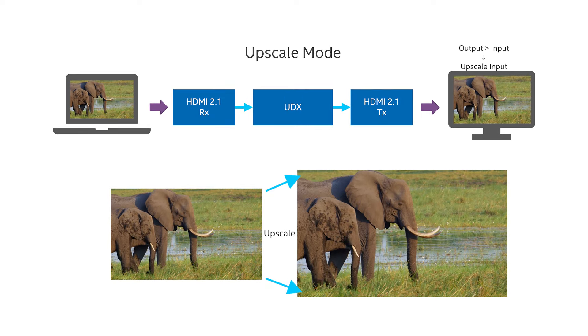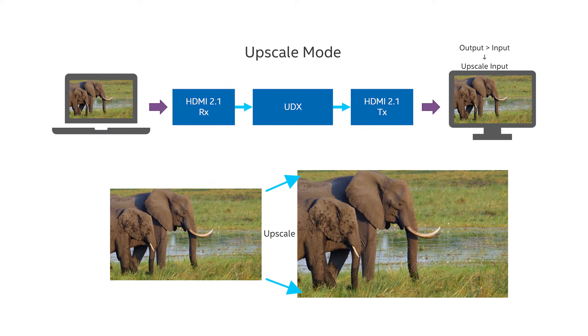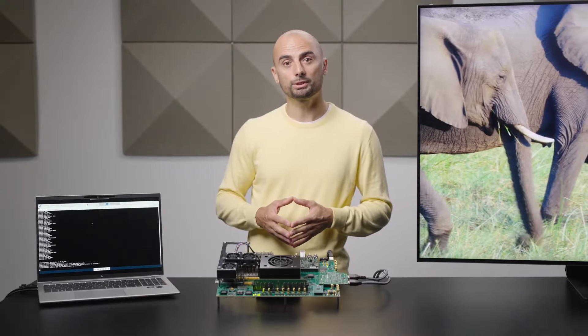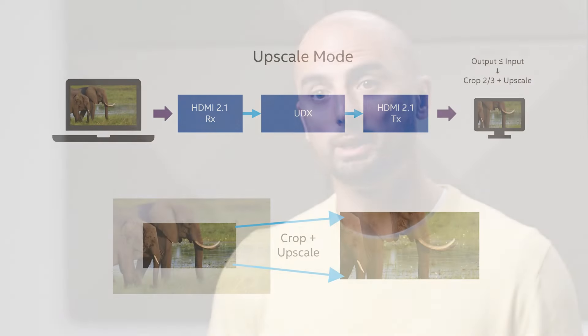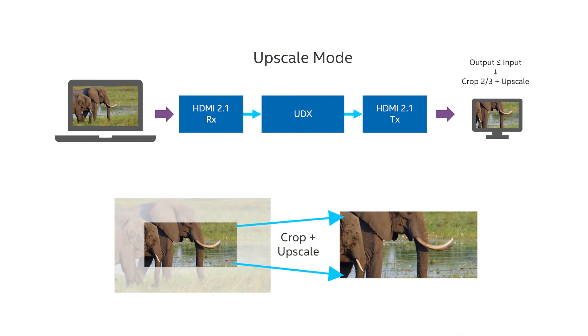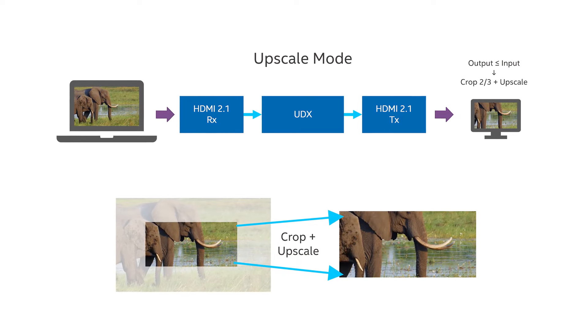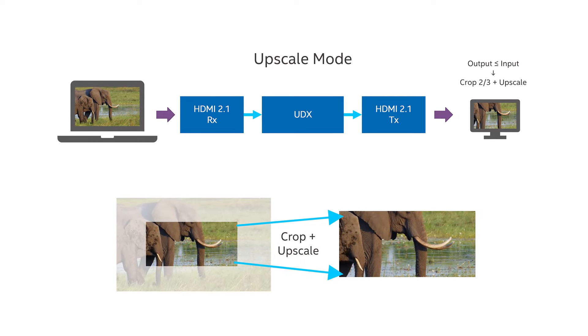If the input is the same size or larger than the output, then the middle two-thirds of the input is cropped by the clipper IP core and the result is scaled to fill the output.